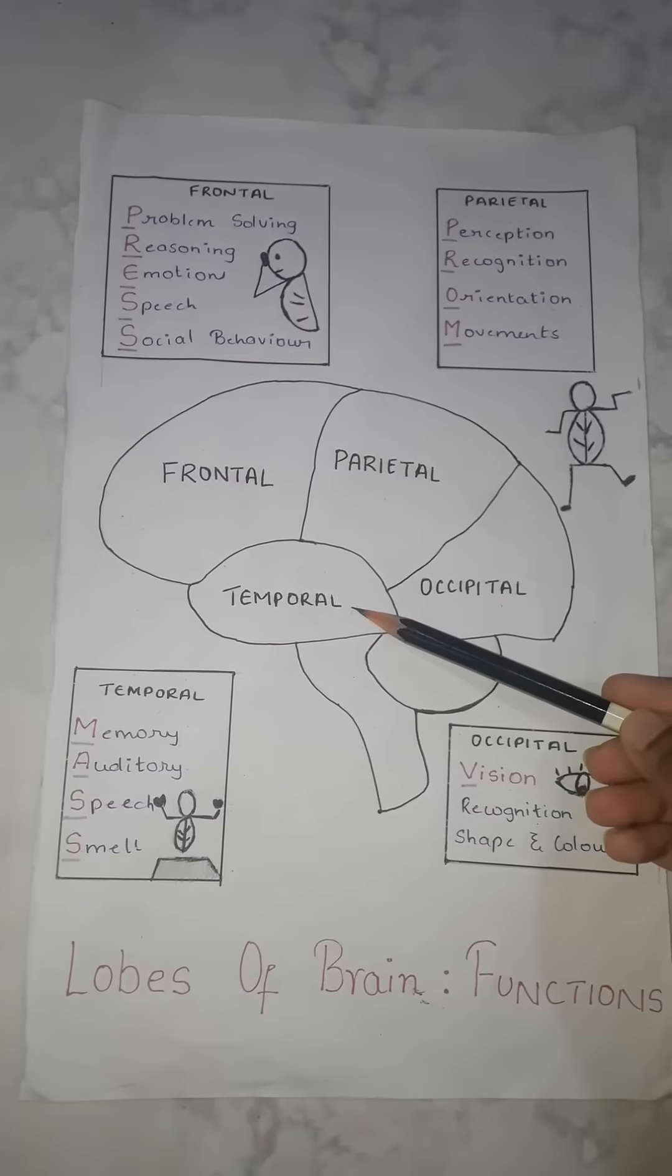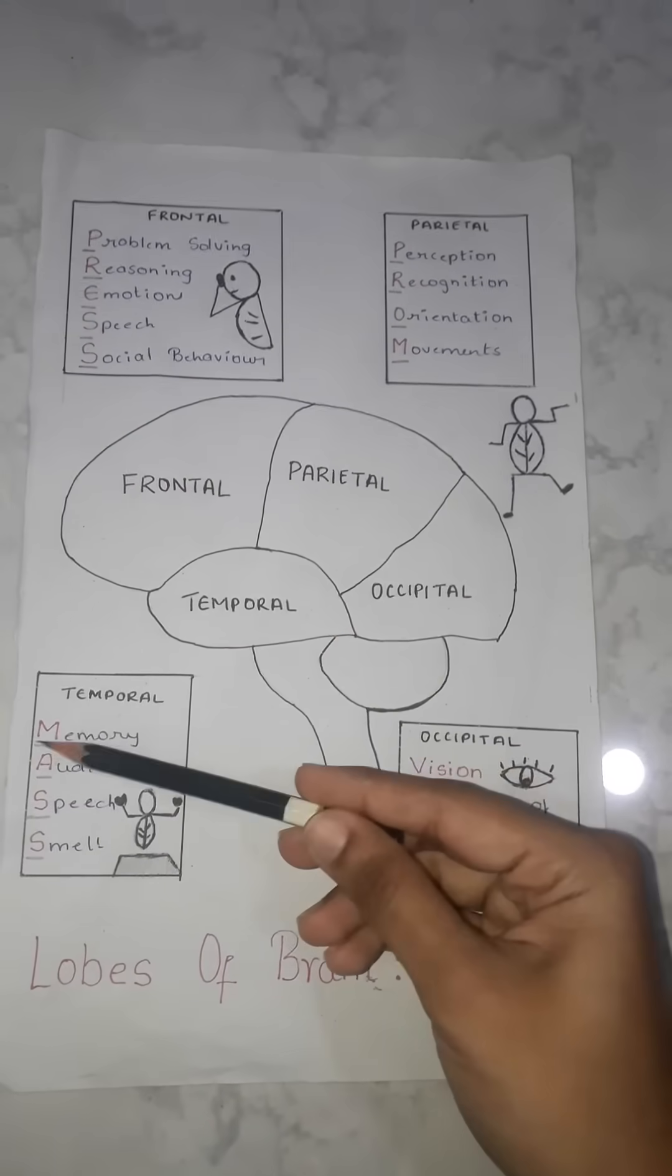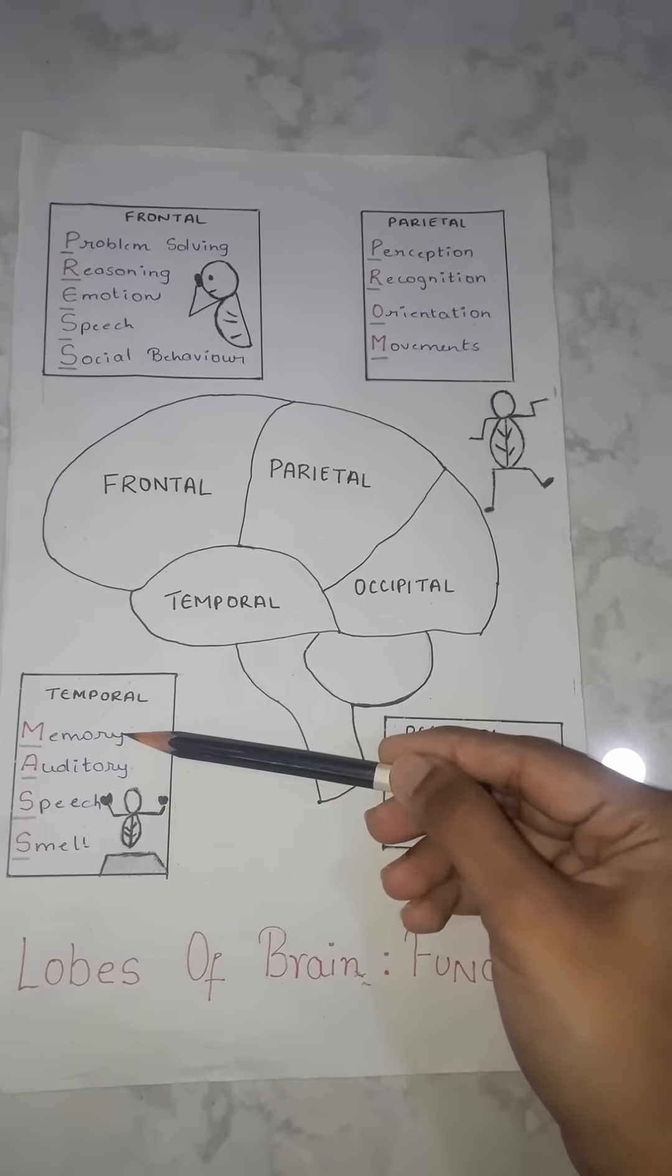Now for the temporal lobe, we have the mnemonic MAS, M-A-S-S. M stands for memory.